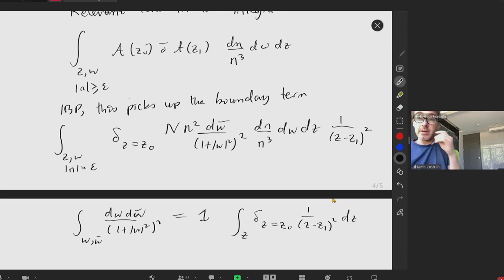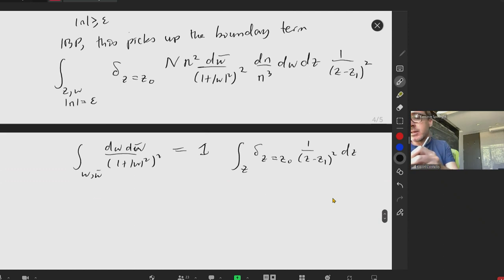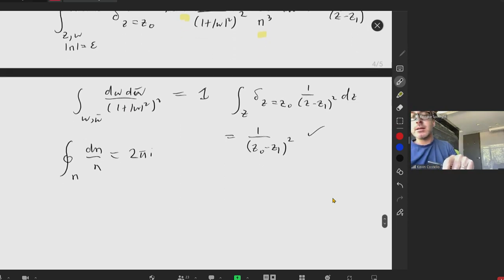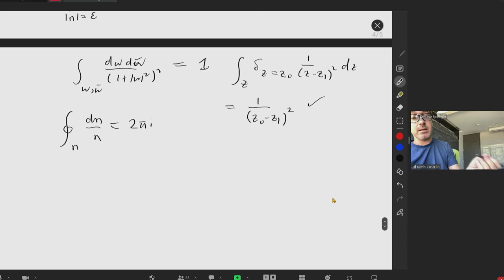Why is that? The integral over w of dw dw bar, 1 plus w squared squared. This is just the natural volume form in CP1 for the Fubini-Study metric. So this is basically 1, but it's a multiple of pi. So that part goes away. The integral over z - well, because I have a delta function in the integrand, all that does is produces 1 over z0 minus z1 squared. And that looks good.